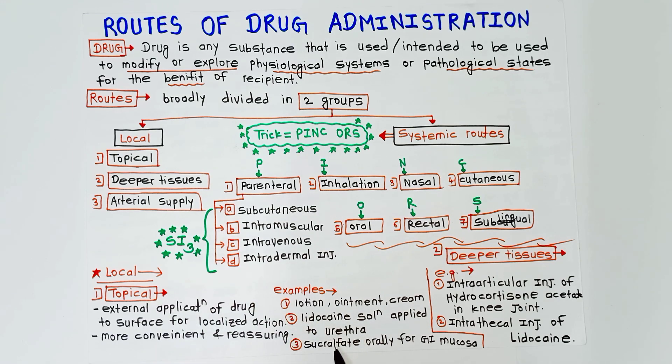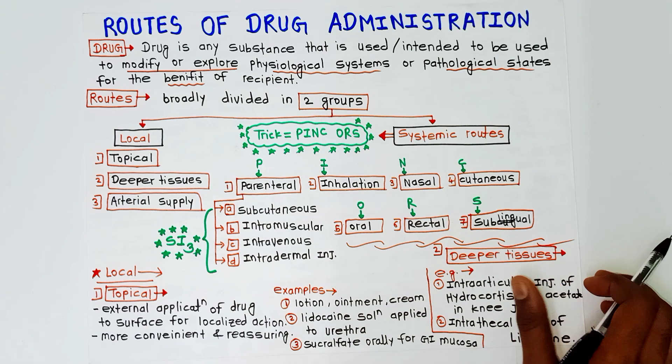Sucralfate given orally for GI mucosa is also an example of topical route. Next is deeper tissues - example of this is intra-articular injection of hydrocortisone acetate in the knee joint, and intra-articular injection of lidocaine.